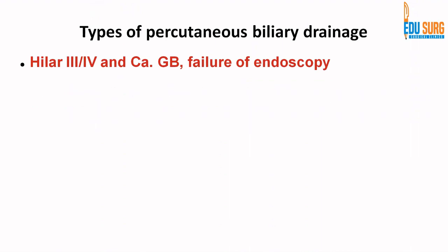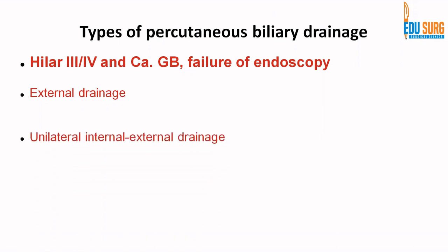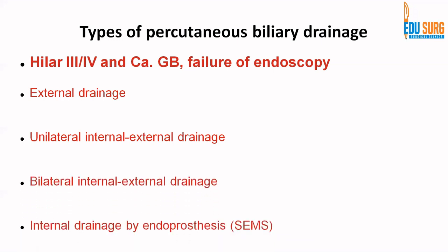Percutaneous biliary drainage is reserved for hilar cholangiocarcinoma Bismuth types 3 and 4, and for failure of endoscopy. If the patient has cholangitis, the first step is external drainage to drain the infection outside, then internalization to internal-external drainage — a catheter crossing the disease with an external drainage catheter still in place. The stepwise approach is: external drainage, then internal-external drainage, then internalization, which can be unilateral or bilateral. Without infection, you can go directly for internal-external or internal drainage by endoprosthesis.